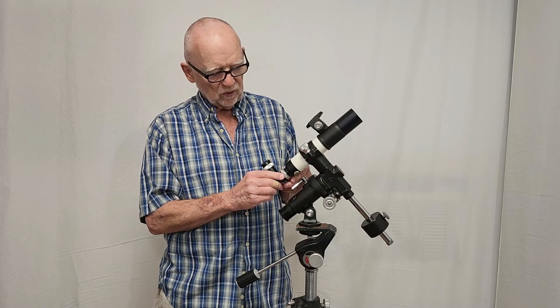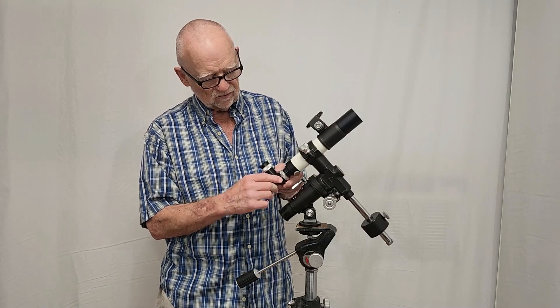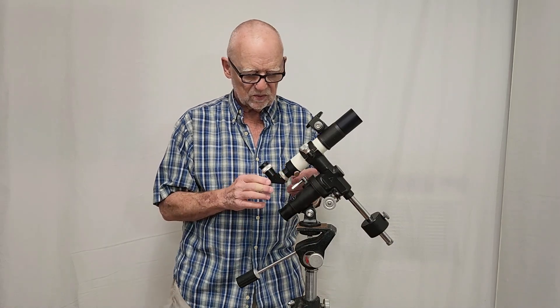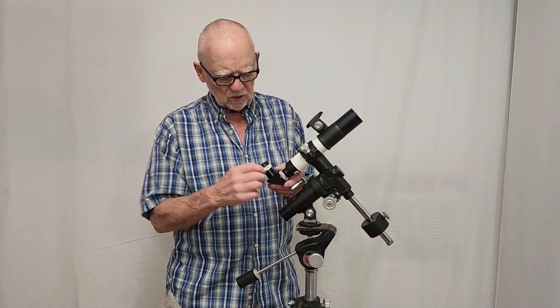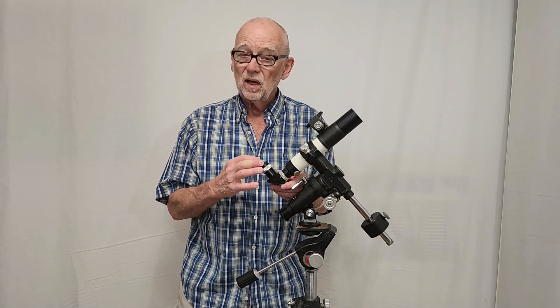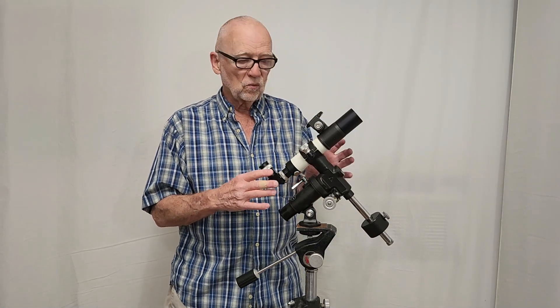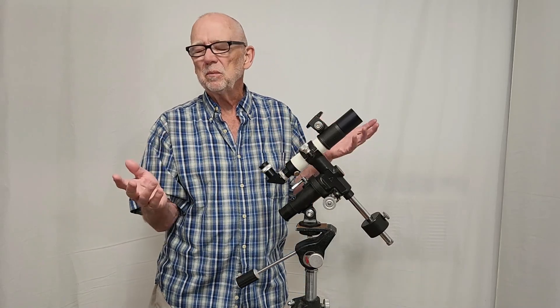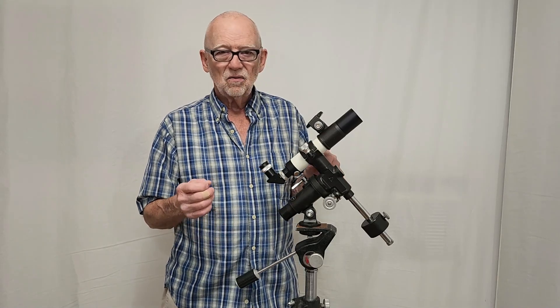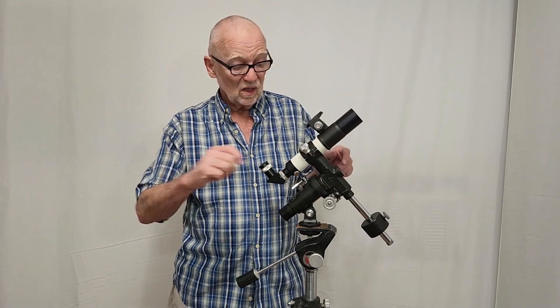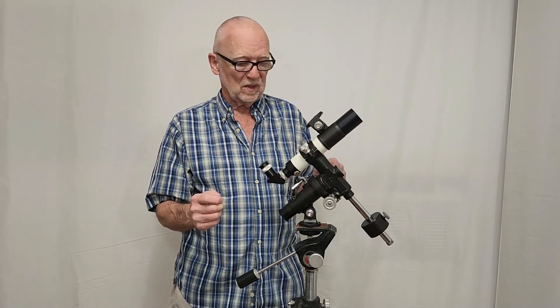Now the guide scope is a 40 millimeter guide scope. There's the focusing. The focusing on this is real primitive. You just do it like so and that's what you get. This is a star diagonal and a special guiding eyepiece. You don't need anything real precise for this because you're going to piggyback a 50 millimeter or 85 millimeter lens, something like that. For a long exposure shot this is going to be something maybe 10, 15, 20 minutes of guiding, hand guiding with this thing.